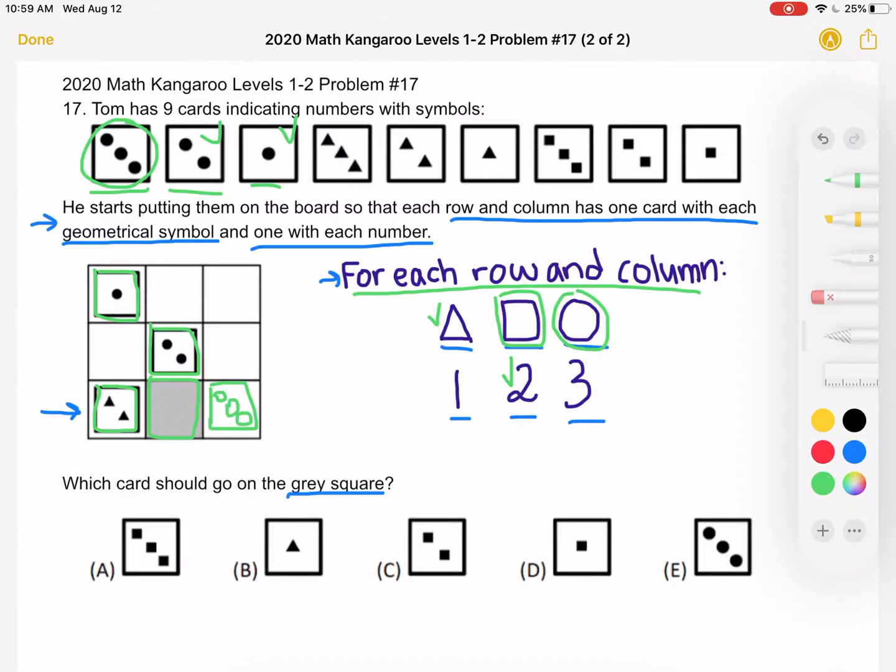And this is very important because looking back at our restrictions, now we've placed the circle and we've used three. So what do we have left? We have one and square.